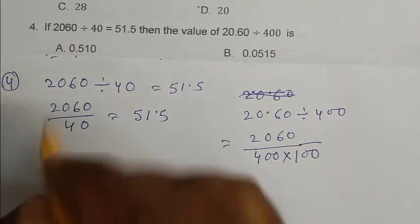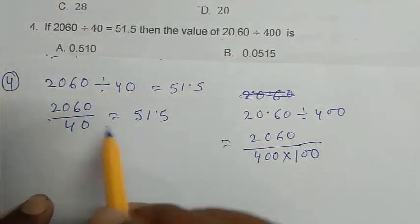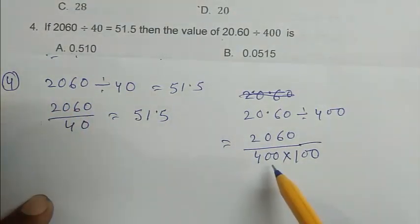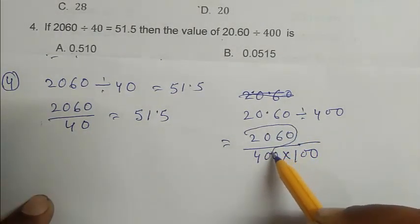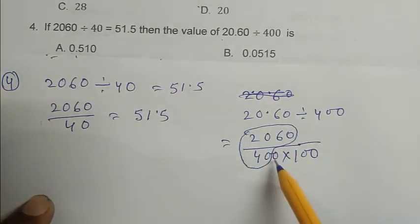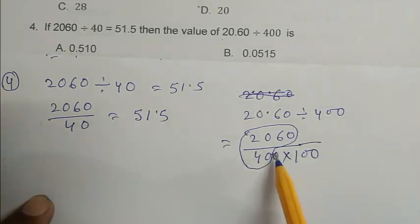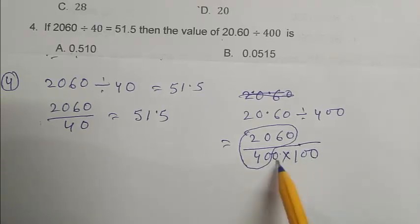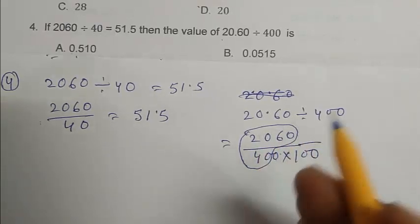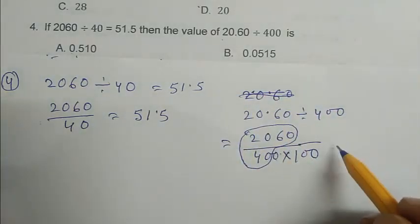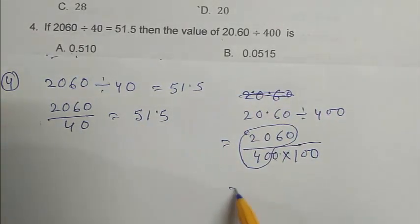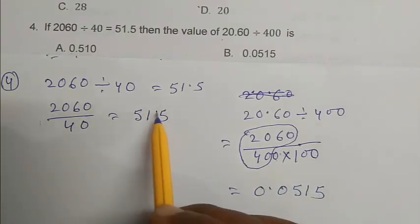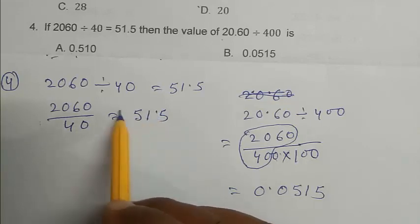So this expression is 51.5. So we have to circle this area here. So we have to 10 over there. We have to this area 40. So there is a 3, 0. In 3, 0, 0 is here. So we have to move the point 3 place left side. So the answer become 0.0515.